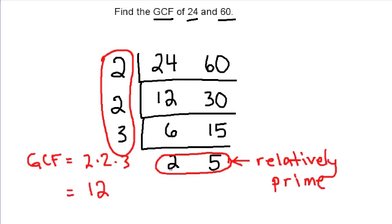And actually, if you look at these numbers here at the bottom, you can kind of see that that works out well. 24 divided by 12 is 2, and 60 divided by 12 is 5. And that is how we can use double division or the ladder method to find the GCF of two numbers.